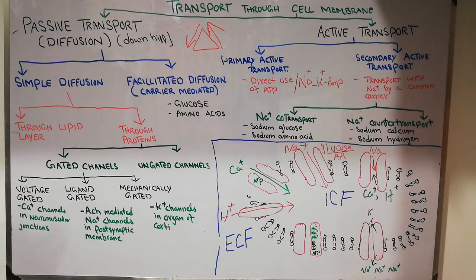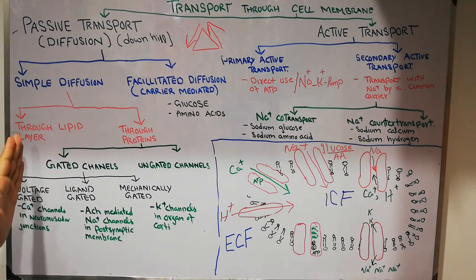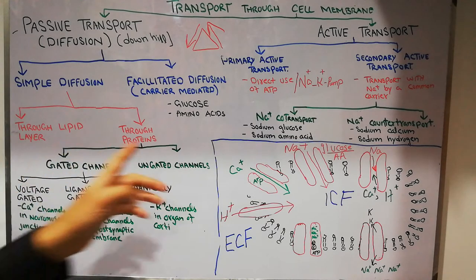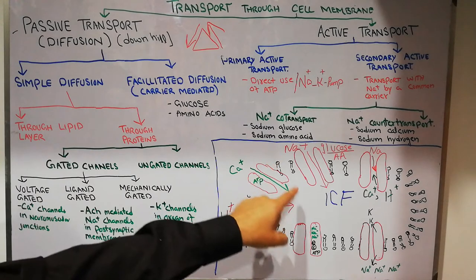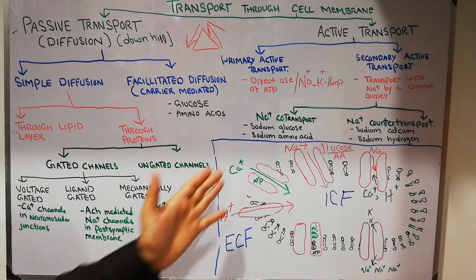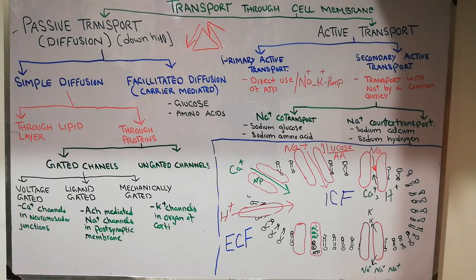The passive transport is of two types: simple diffusion and facilitated diffusion. Simple diffusion is further of two types — it is either directly through the lipid layer or through protein channels. Substances which cannot go through the lipid layer go through the proteins. Those proteins are either gated or un-gated. Un-gated channels are open most of the time but are specific — sodium-specific, potassium-specific, magnesium-specific, or calcium-specific — and only one specific substance can pass through them. Gated channels have different modes for how their gates open or close.